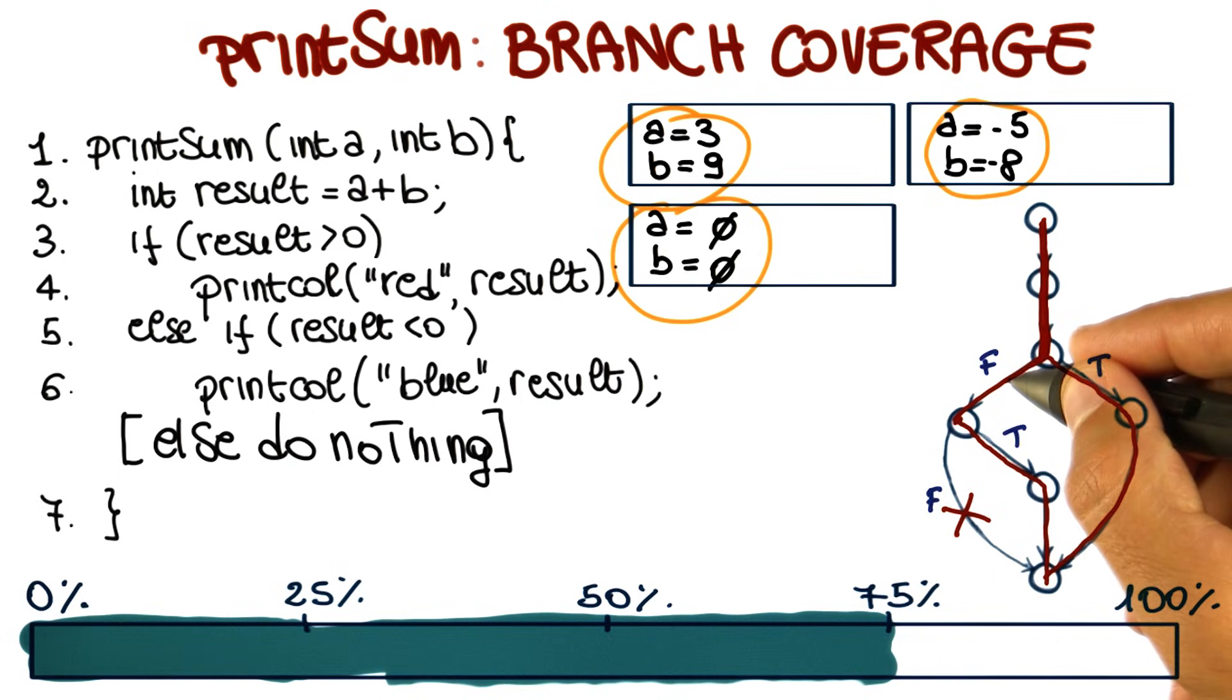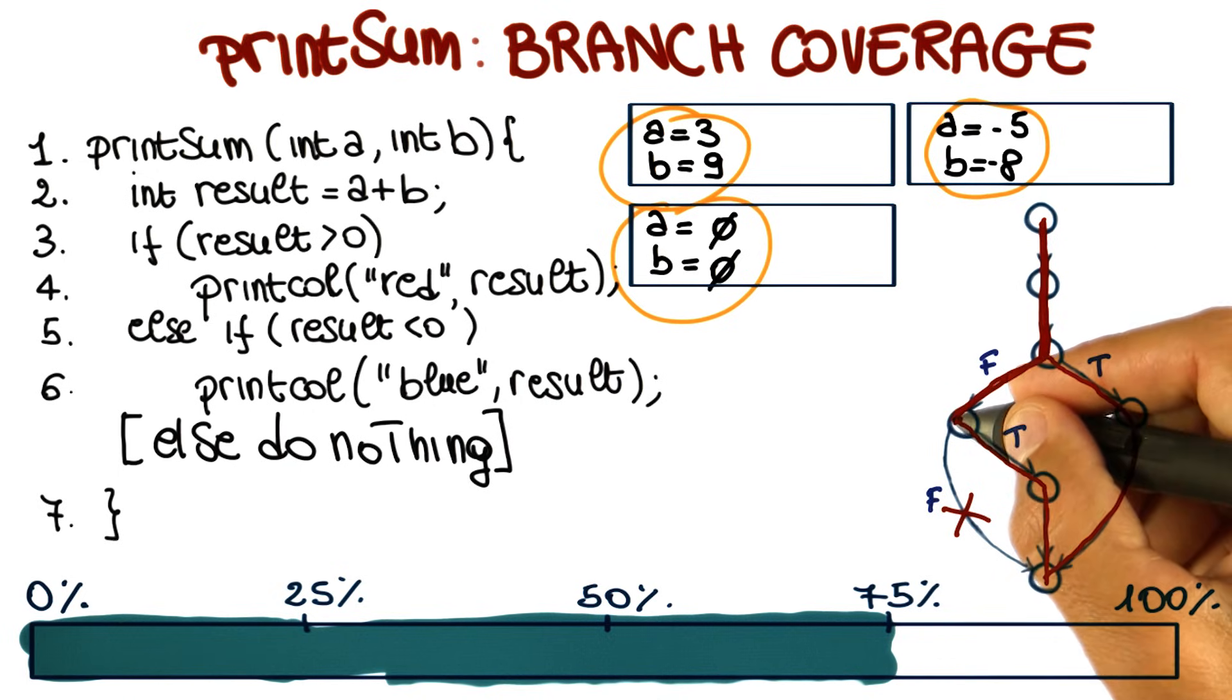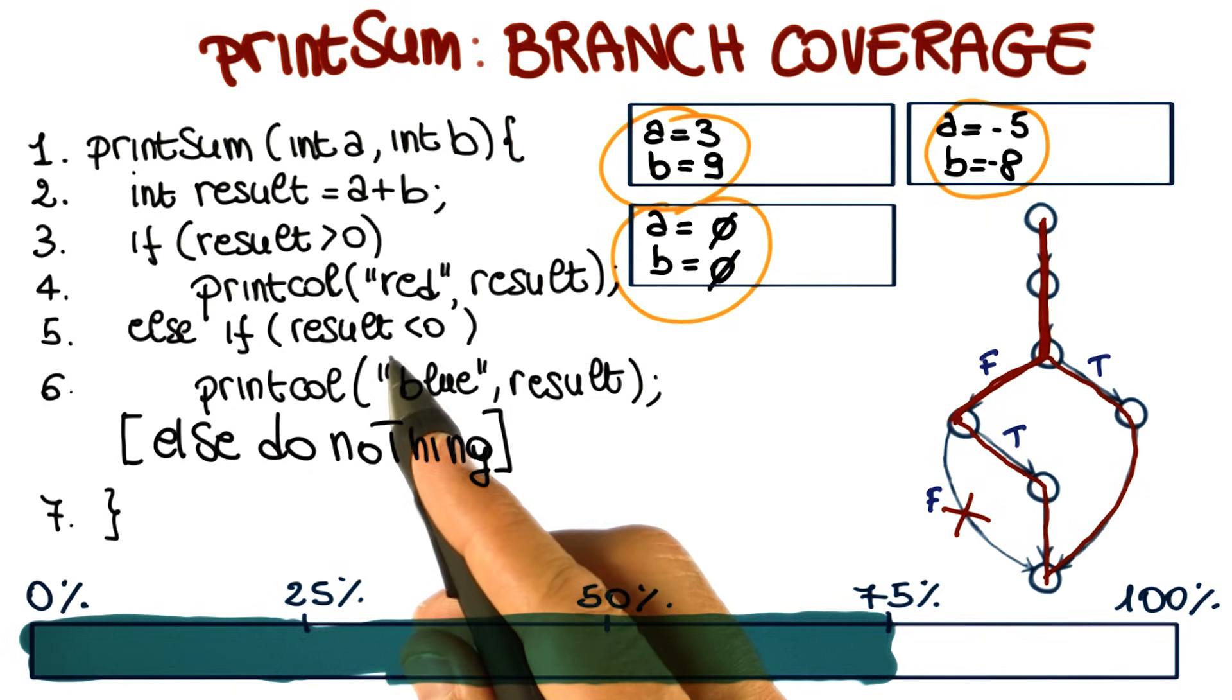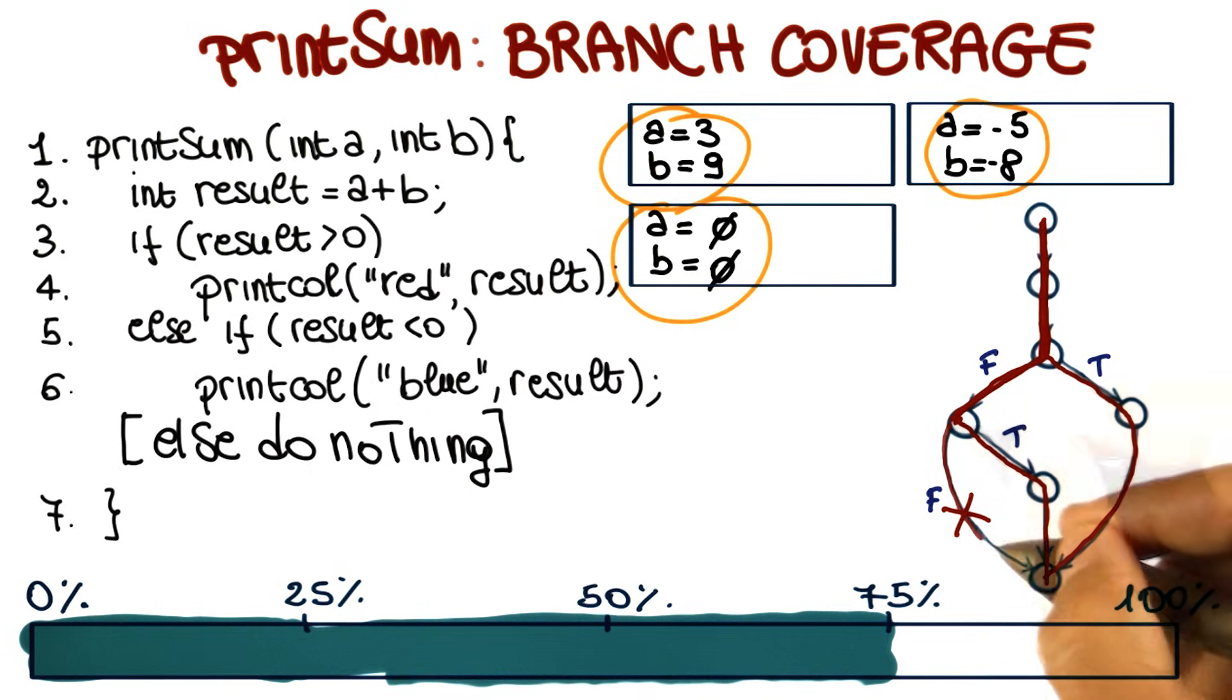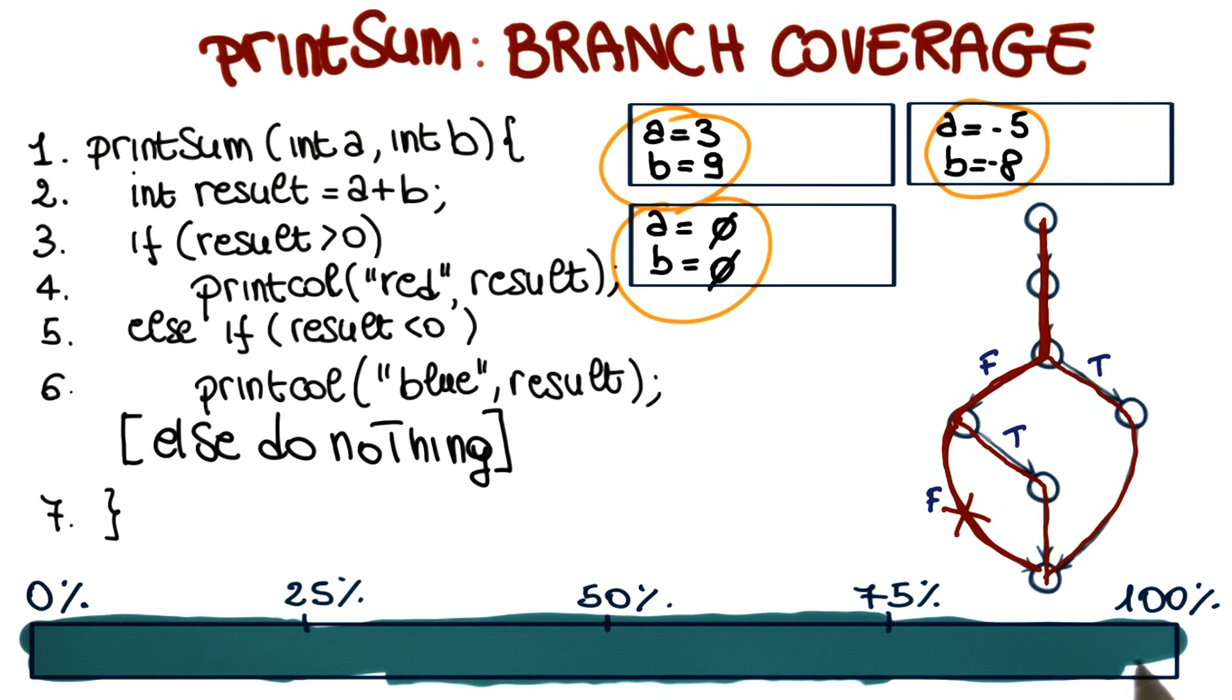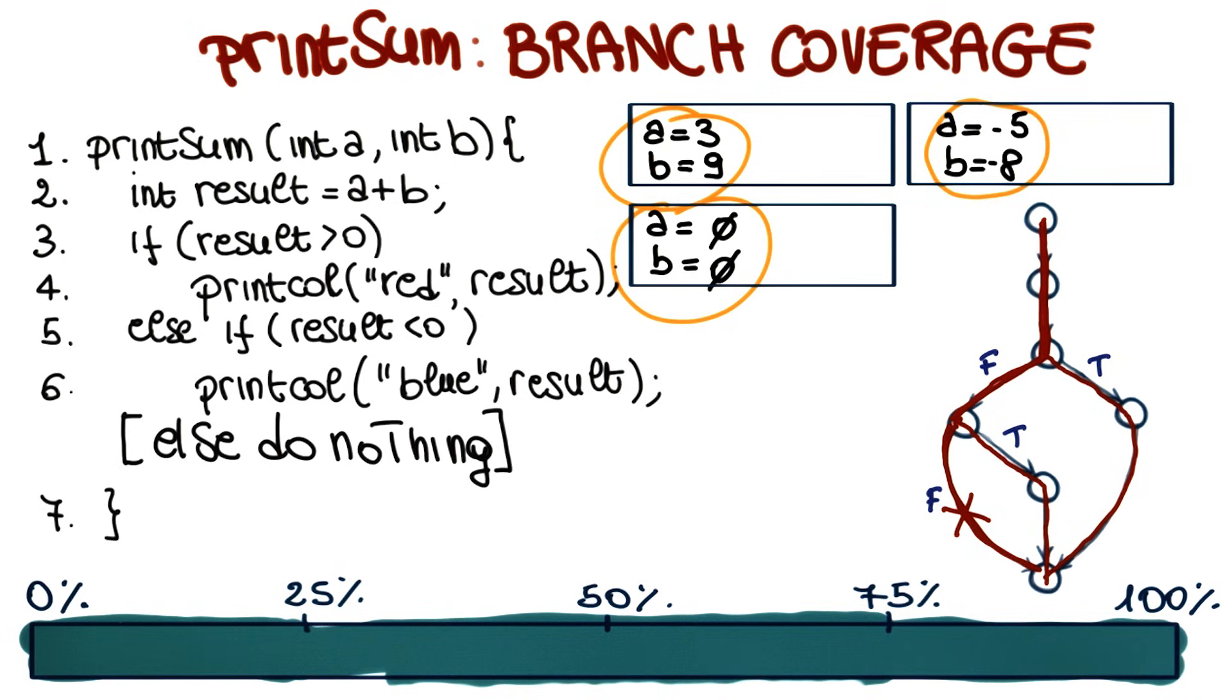If we execute this test case, our execution again follows these paths, follows the false branch here. And in this case, because result is not less than zero either, we'll follow this branch as well. And therefore, we will reach our 100% branch coverage and discover the problem.